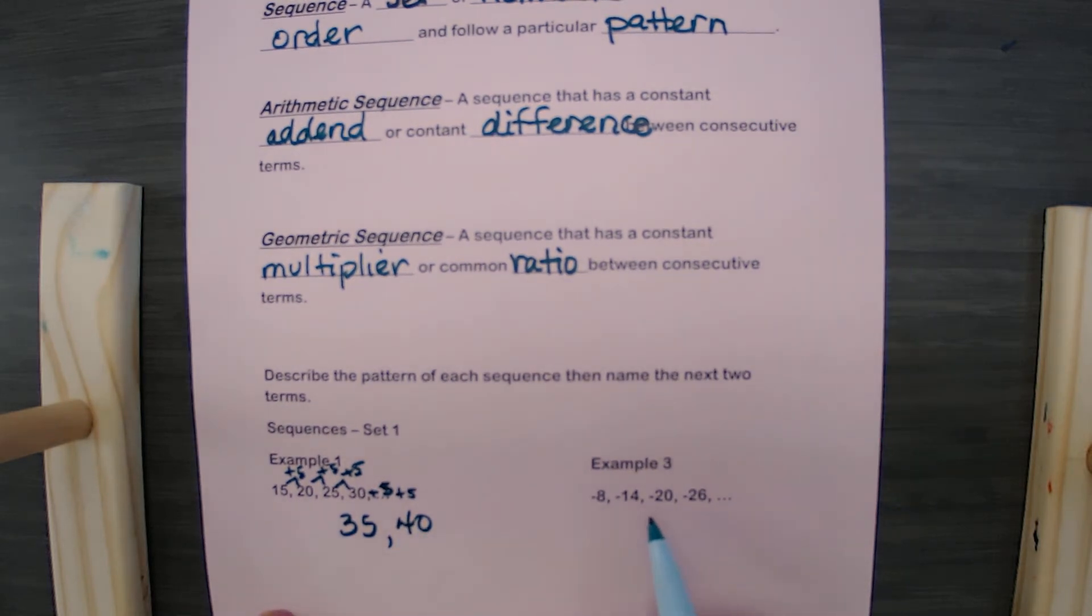Now I want to look at the next one. This one is decreasing, whereas this one was increasing. So this sequence is going down. It looks like it's going down by 6. The numbers are getting smaller and they're going further down to the left on the number line. So what we're doing is we're subtracting 6 each time, or adding a negative 6. So if I go further down the number line my next terms would be negative 32 and negative 38.